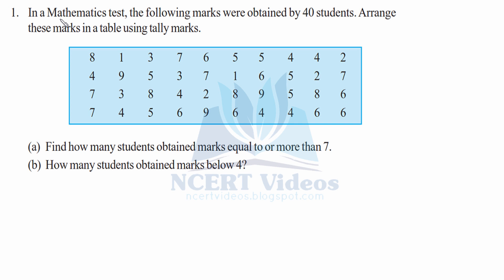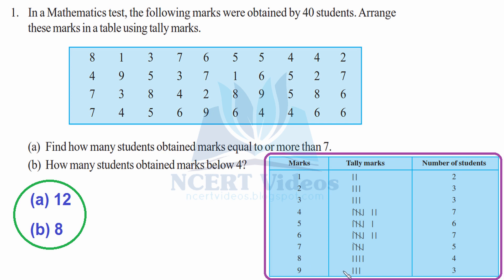Question 1: In a mathematics test, the following marks were obtained by 40 students. We have to arrange these marks in a table using tally marks. We need to find: part A, how many students obtained marks equal to or more than 7, and part B, how many students obtained marks below 4. We will make three columns: marks, tally marks, and number of students.